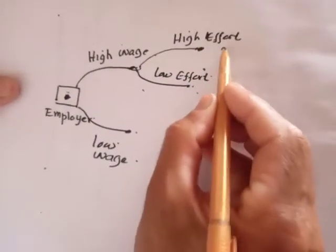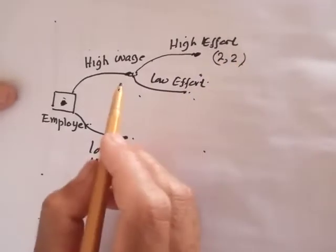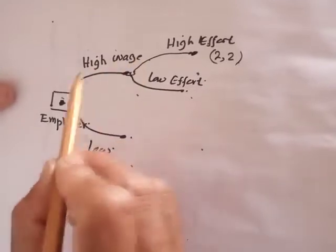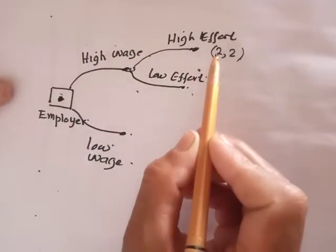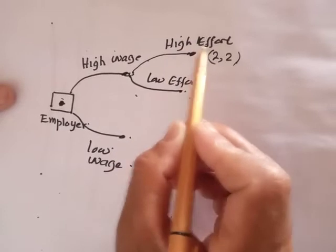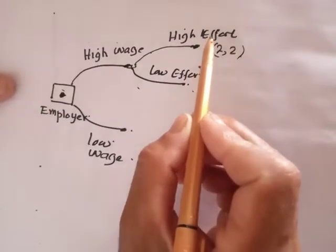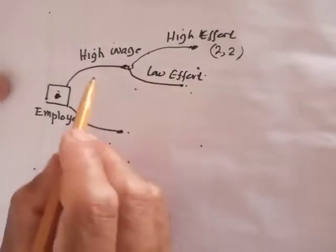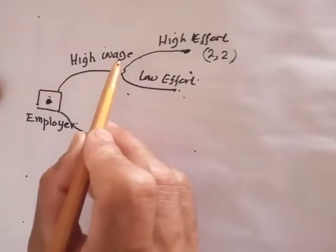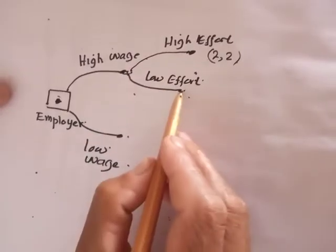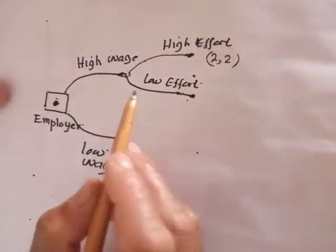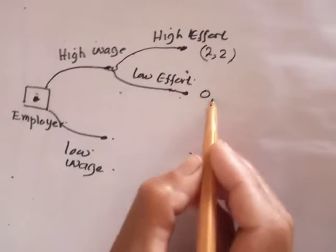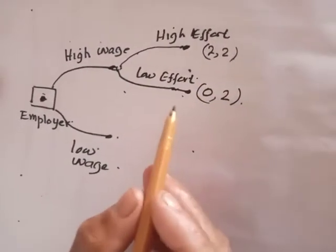In the first situation, the payoff is supposed to be two and two. This is the benefit of high wage — the employer gets a return for paying a high wage with high effort. The payoff in the second situation is zero and two.